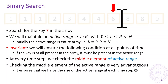Note that throughout the execution of the algorithm, we continued to maintain the invariant that the key being searched for could not have been present outside of the active range, which is why we were sure that once the active range became empty, it meant that the key did not exist in the array at all. Also note that although there were 11 elements in the array, we only checked three of them before concluding that the key did not exist.